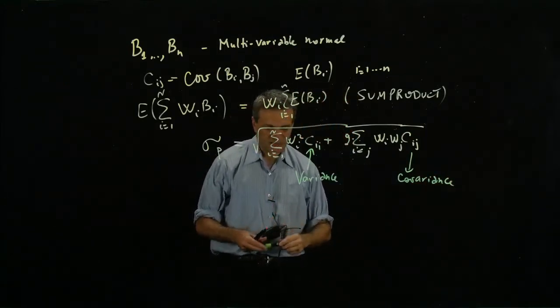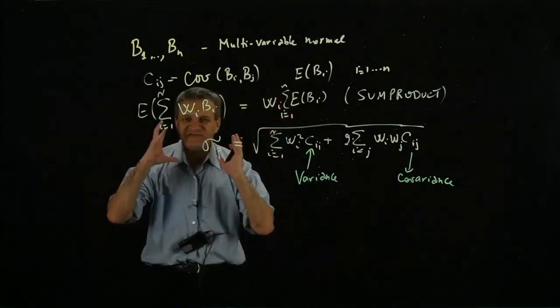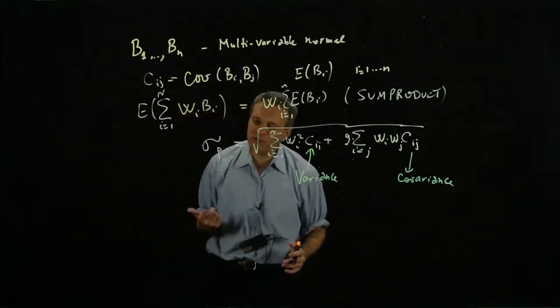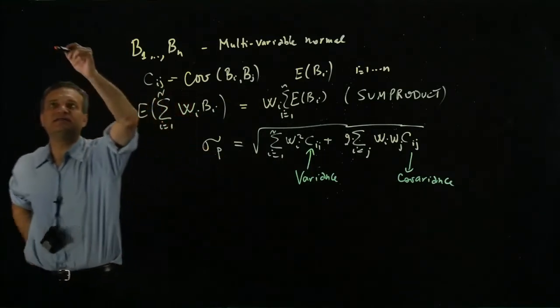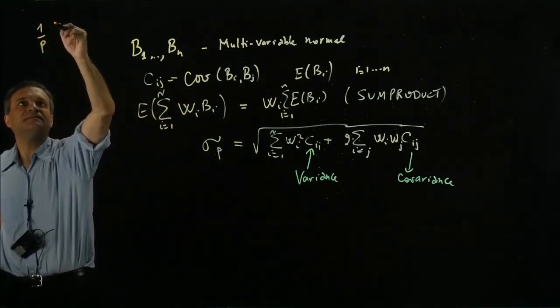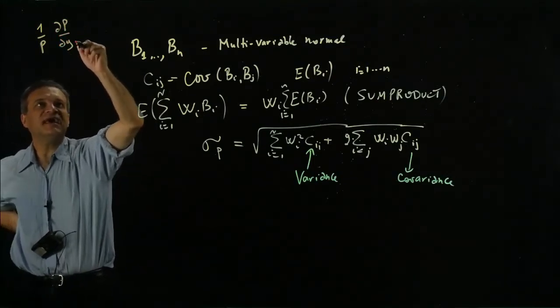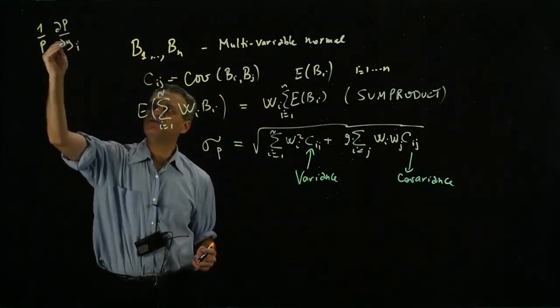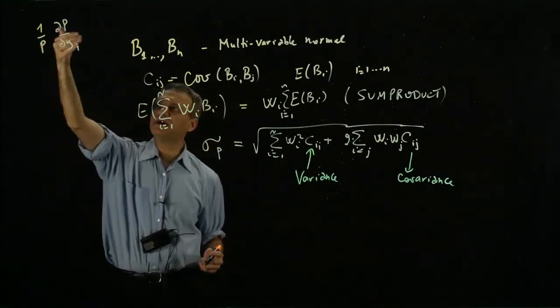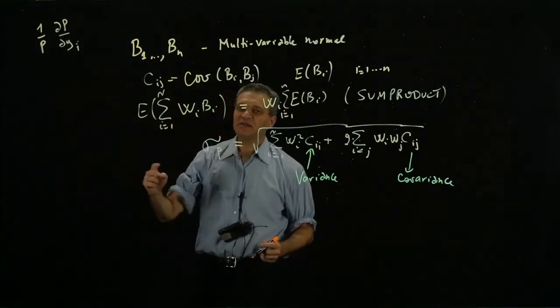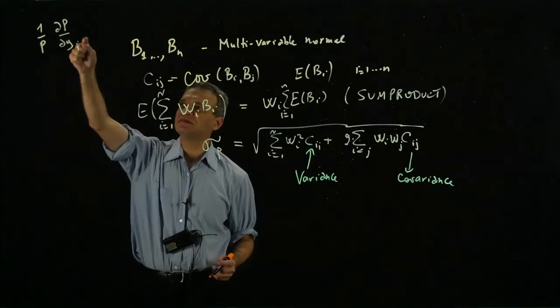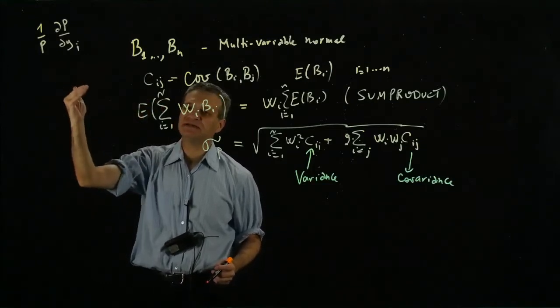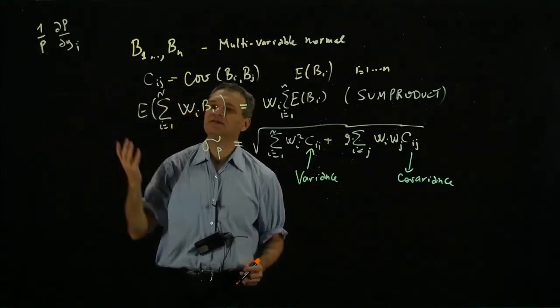Now we want to develop this concept, which is similar to key rate durations for fixed income. Remember we had key rate durations: one over p times δp/δyi. It gave us a sensitivity—the sensitivity of the price to each yield. But it's a relative sensitivity, so if the price is 100 and the yield moves by 2%, the price moves by 102.